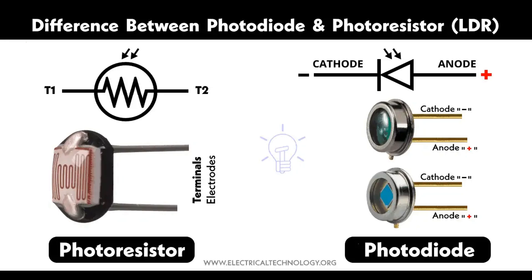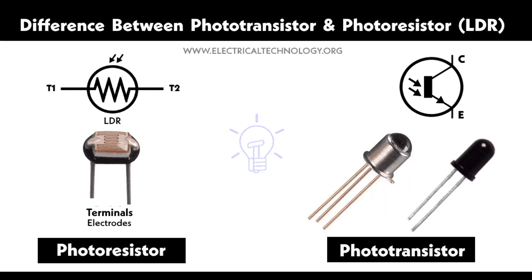Light-sensitive area: The phototransistor has a transparent window or lens above the base region to allow light to enter. This window is often made of materials like glass or clear plastic. The entire phototransistor is encapsulated in a package that protects the internal components, and the package is often designed to be transparent or have a transparent portion to allow light to reach the base region.